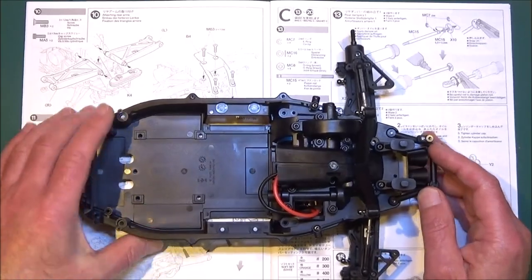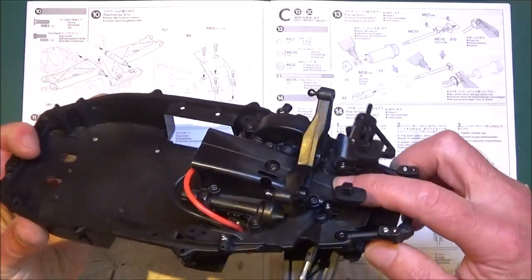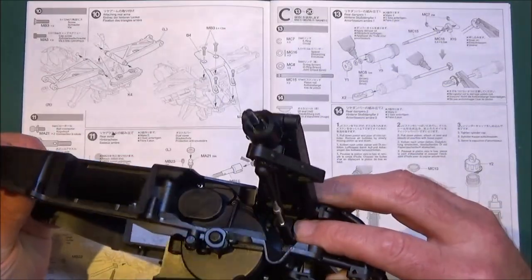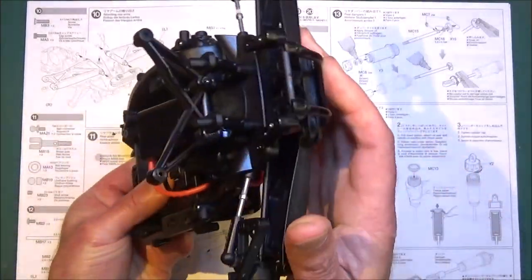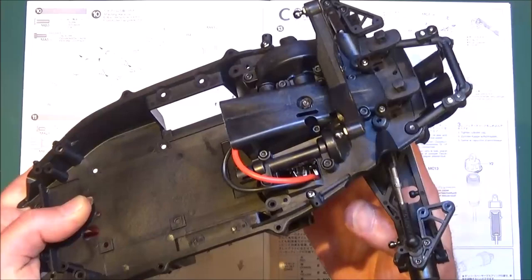This is where we got to last time, so you can see we've got the rear gearboxes fully assembled and we've got the rear differential in there and the rear suspension arms on. Oh yeah, and there's the motor in there as well too.